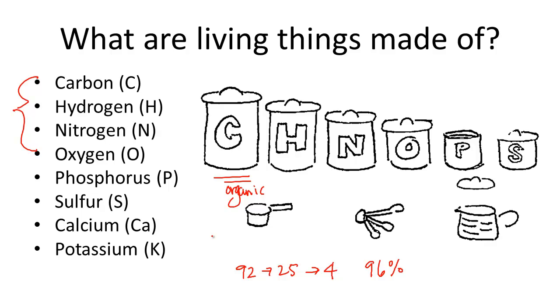As we said, there are 25 that are essential to life. And so here's an easy mnemonic to use: Chris helped Noah order plain soft crust pizza.